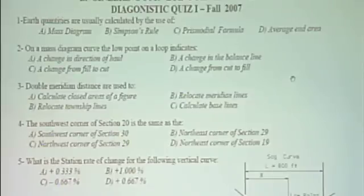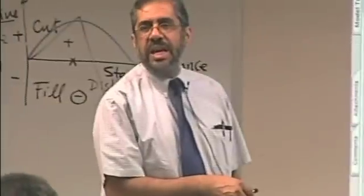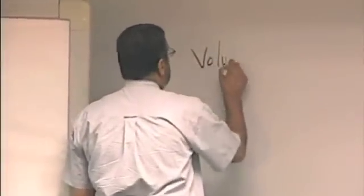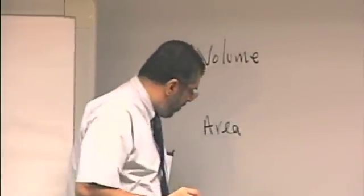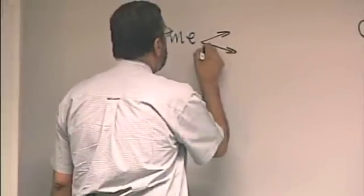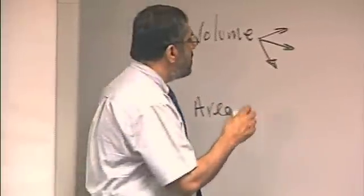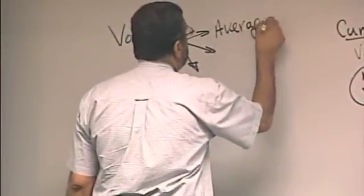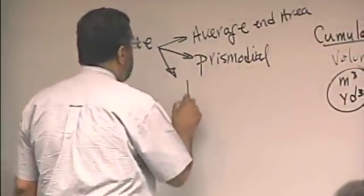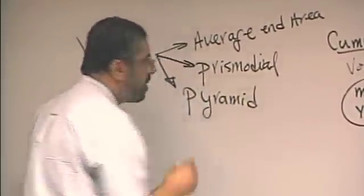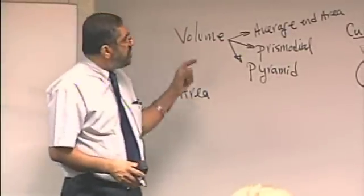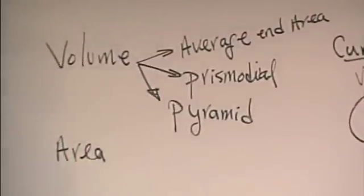A prismoidal formula. Is it possible to have answer C? Answer C, prismoidal formula as an answer. Volume and the areas are important for us. In this class, volume, area. We are going to calculate the volume using different methods. We are going to calculate the area using different methods. Volume, we have three important methods we should be familiar with. Number one, average end area, prismoidal and the pyramid method or truncated pyramid which is a subsection of the pyramid. So three methods to be used to calculate the volume. Average end area, prismoidal, pyramid. And each one of these has advantages and disadvantages.